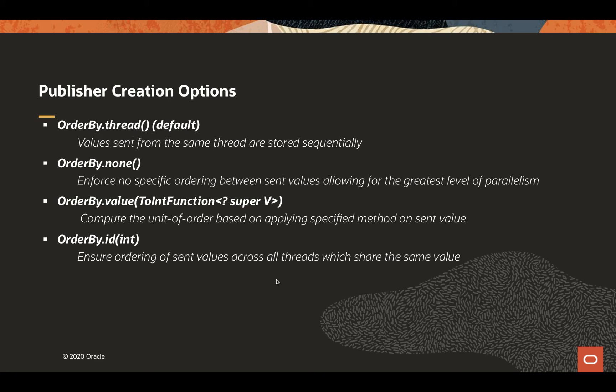The publisher creation options include many different flavors for preserving order — from not preserving order at all with OrderBy.NONE, to the default of OrderBy.THREAD. What this means is that when a publisher on a thread sends values 1, 2, 3, they are stored sequentially in the data grid, so they have the possibility of being consumed in the order they were published.